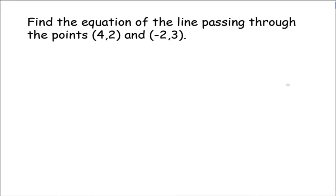We'll start with our first example: find the equation of the line passing through the points (4, 2) and (-2, 3). In order to find the equation of a line, we're going to use either the slope-intercept form or the point-slope form. In both of those forms, we must know the slope of the line. If we are not given the slope, we have to have enough information to go find it. All we're given here is that our line goes through (4, 2) and (-2, 3), but that's all we need to find the slope.